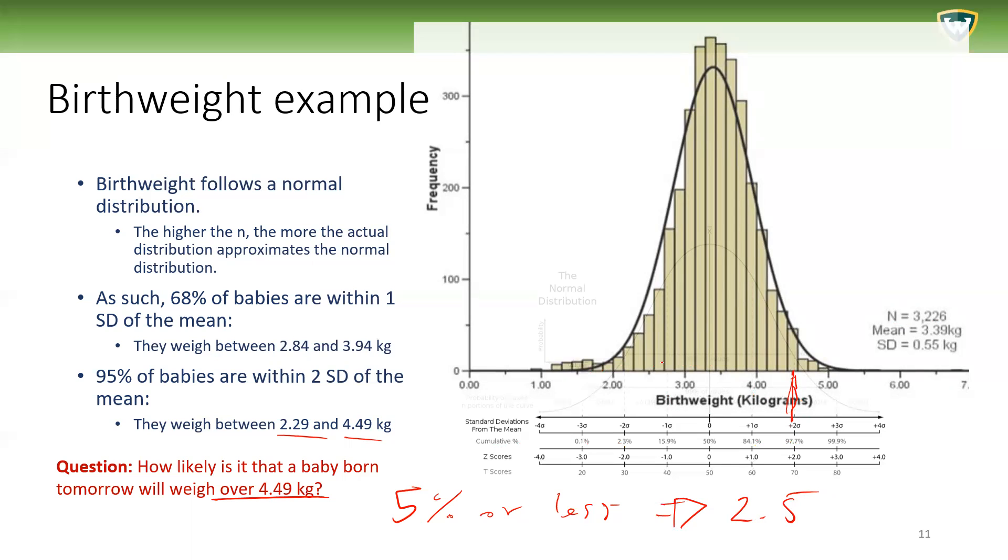The chance is 2.5% here of the babies and 2.5% here. So the chance of a baby born tomorrow weighing over 4.49—just greater, in this area here—the chance that a baby will be born with this weight is actually only 2.5% or less. You can see here 97.7%—it's not identical, that's 2.3%, but 2.3, 2.5, and so on.